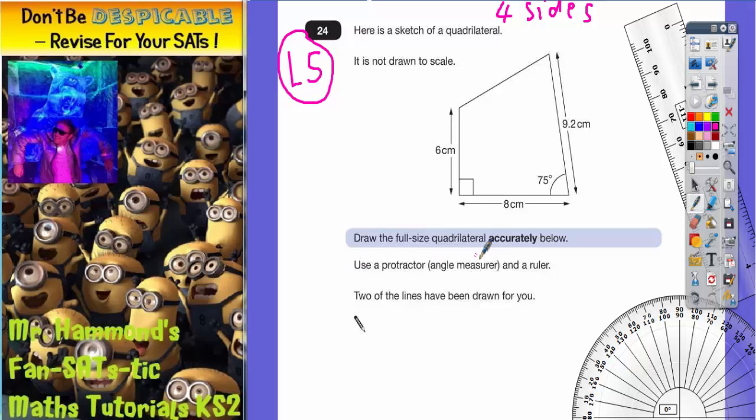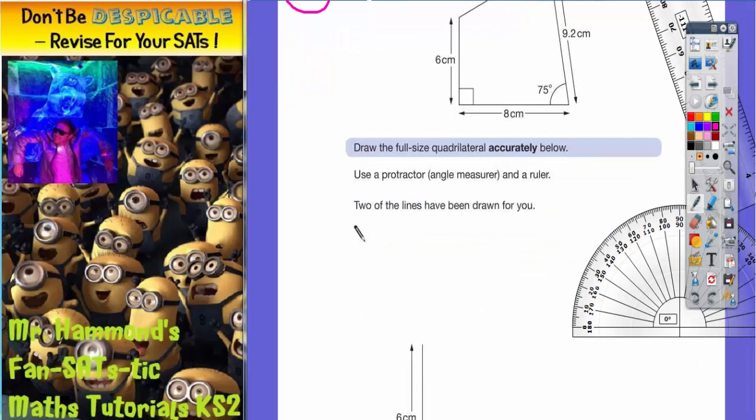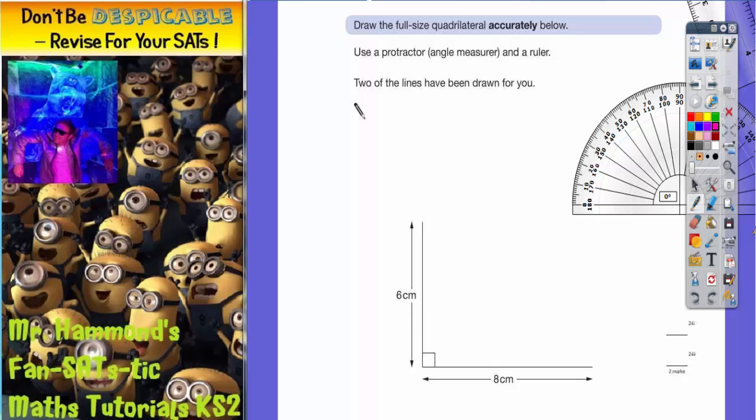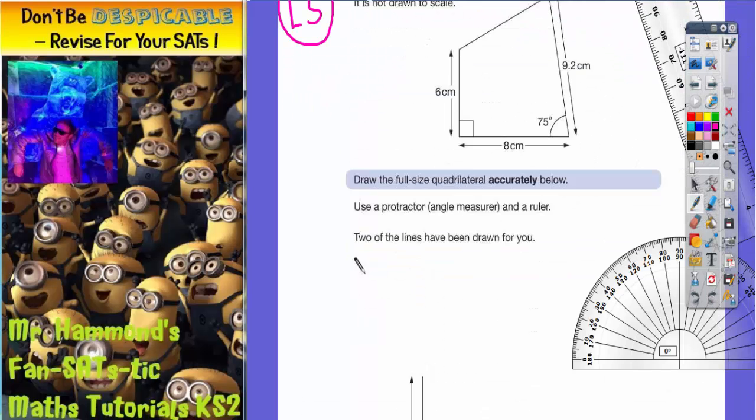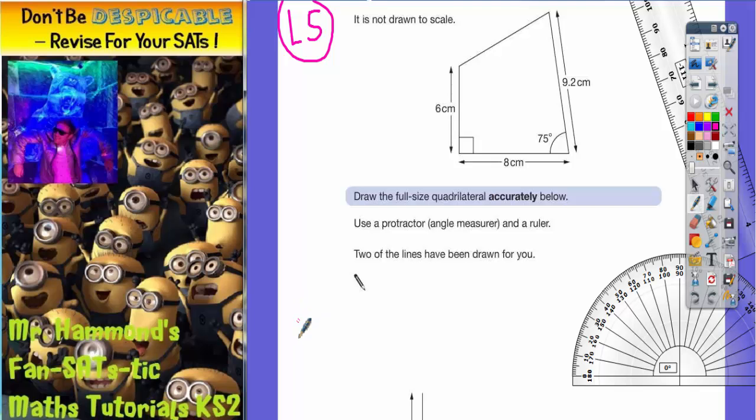We need to draw the full-sized quadrilateral accurately using a protractor (a posh word for an angle measurer) and a ruler. Two of the lines have been drawn for us. To avoid scrolling up and down, I'm going to draw a quick sketch of the shape here.